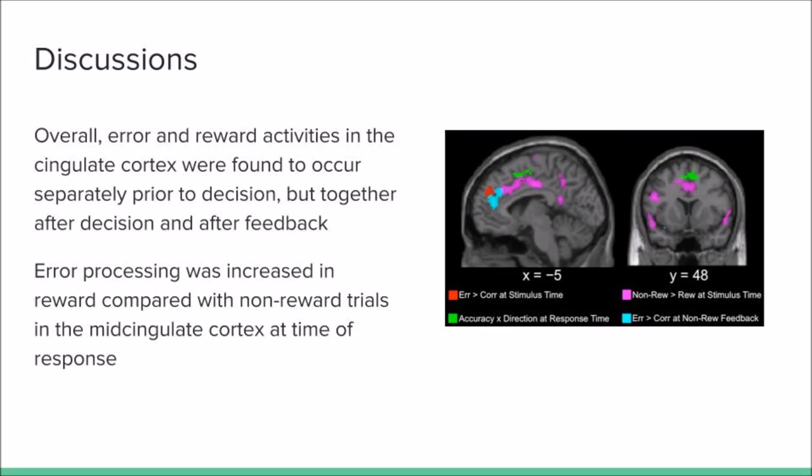Looking at the fMRI images of the experimental subjects show that the activated areas of the anterior cingulate cortex occur separately prior to decision, but have some overlapping after decision and right after feedback.